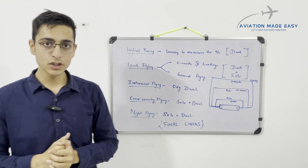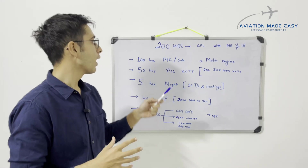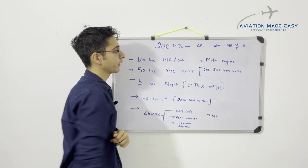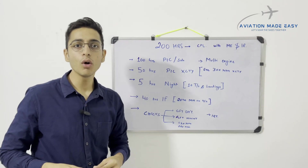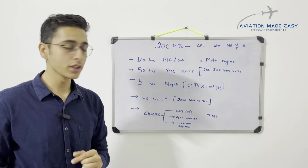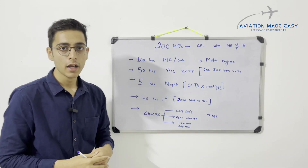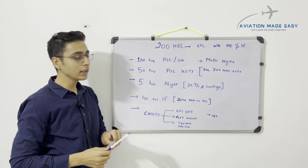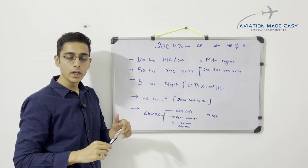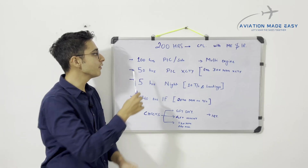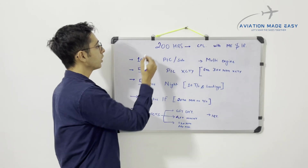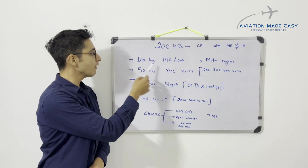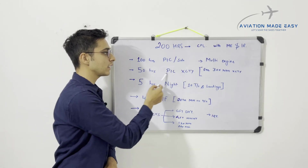Moving to the flying training requirement of 200 hours for CPL with multi-engine and instrument rating — the major requirements are that we must have 100 hours of Pilot in Command or solo time. Once released solo, your solo time is separately logged and you must have a minimum 100 hours of PIC or solo within your 200 hours.